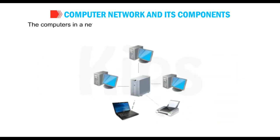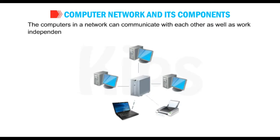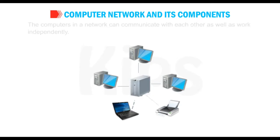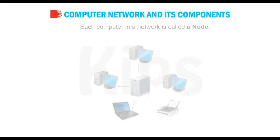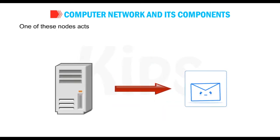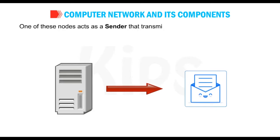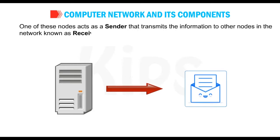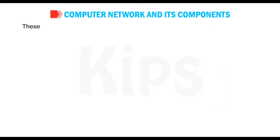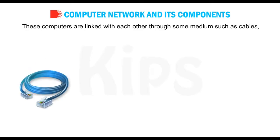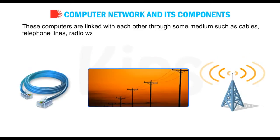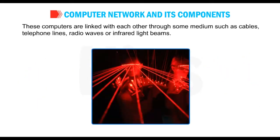The computers in the network can communicate with each other as well as work independently. Each computer in a network is called a node. One of these nodes acts as a sender that transmits the information to other nodes in the network, known as receivers. These computers are linked with each other through some mediums such as cables, telephone lines, radio waves or infrared light beams.